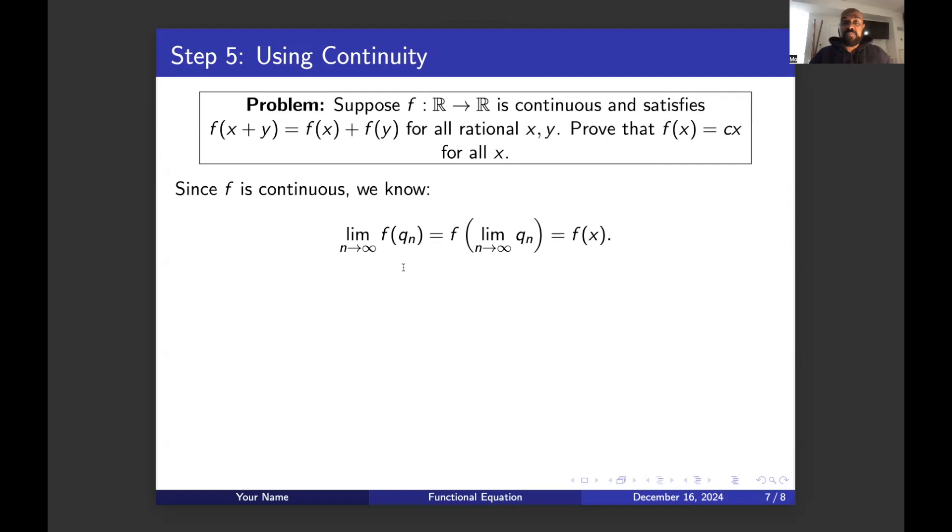However, at the same time, we know that the sequence f of q_n, as n goes to infinity, converges to f of the limit of the sequence we're inputting into the function. And this sequence converges to x. So this sequence of points f of q_n is going to converge to f of x.